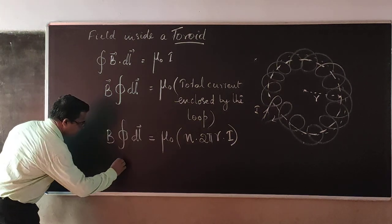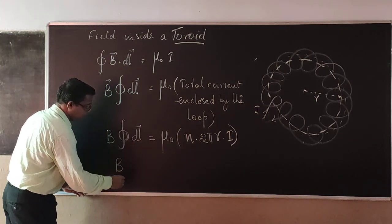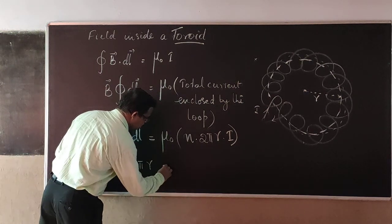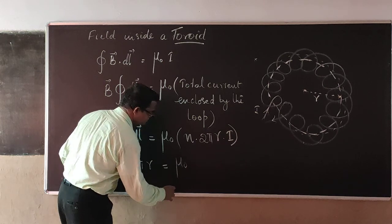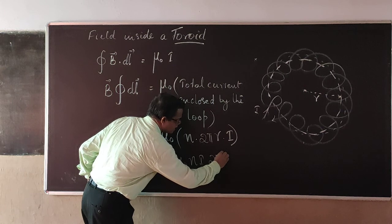Now, by solving B into integral of the closed loop, dL will be equal to n into 2πR. That will be equal to μ₀ times n into I into 2πR.